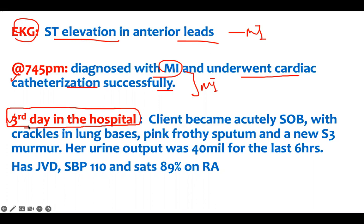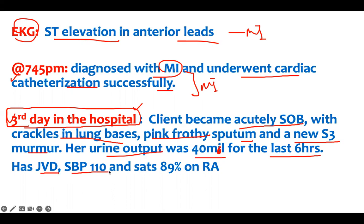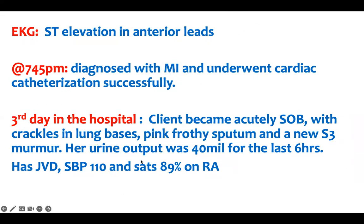Three days later in the hospital, this is where I want you to focus — they can lead you here. The patient became acutely short of breath with crackles in the lung bases, pink frothy sputum, and a new S3 murmur. Urine output was only 40 mL for the last six hours. She has JVD, systolic blood pressure of 110, and oxygen saturation of 89% on room air. I've given you enough information to make the next diagnosis.